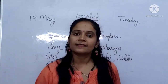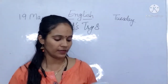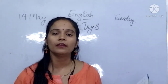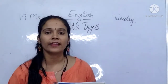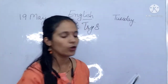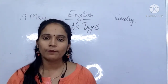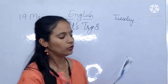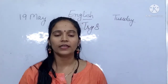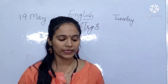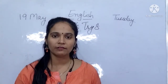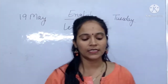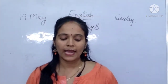Now we will do Let's Try 8. So students, we have done naming words, common naming words, and proper naming words. This exercise on page number 23 — underline the common naming words and circle the proper naming words in these sentences. One has been done for you.